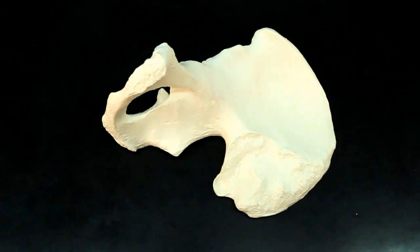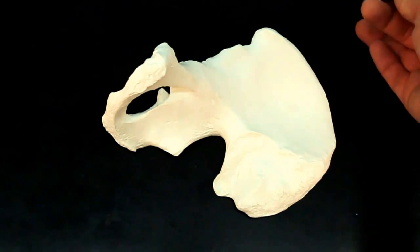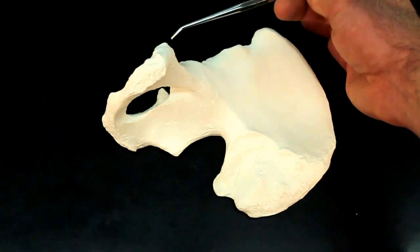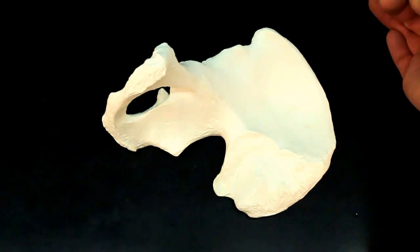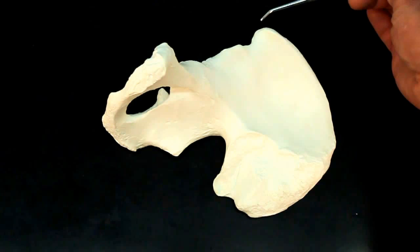Then we have the anterior superior iliac spine. A lot of words, but they tell you exactly what you're looking for. They say anterior, go to the front. Superior, come to the top. Iliac, in the ilium region, spine.